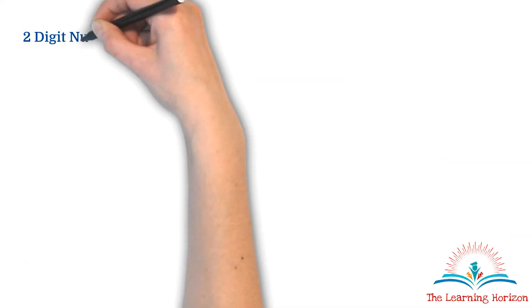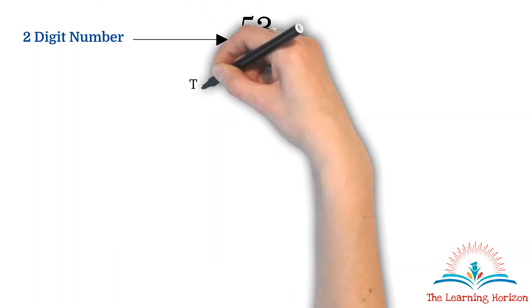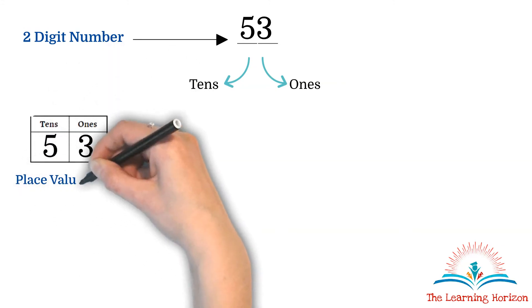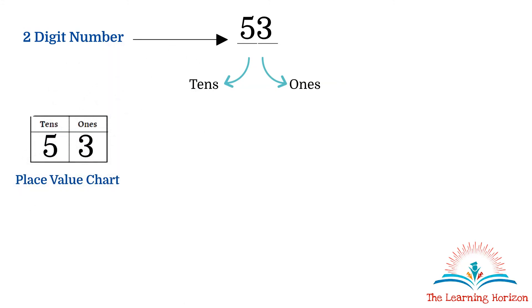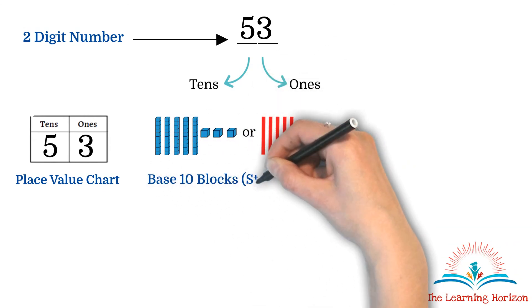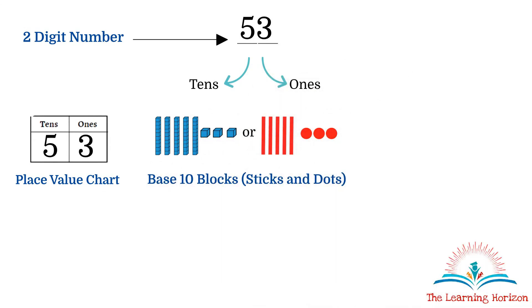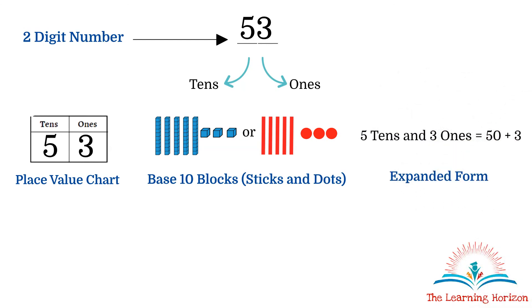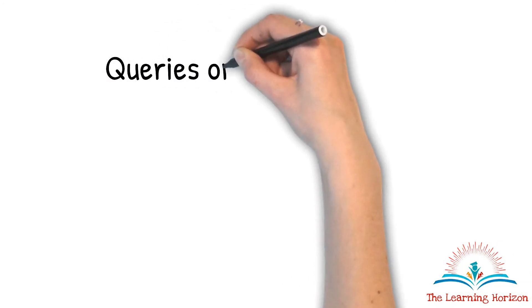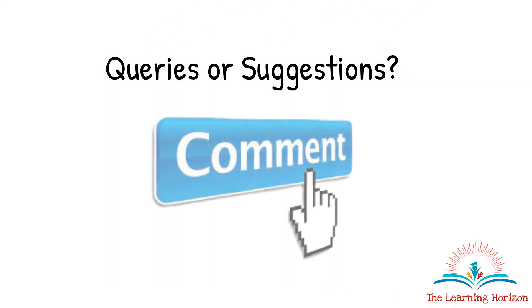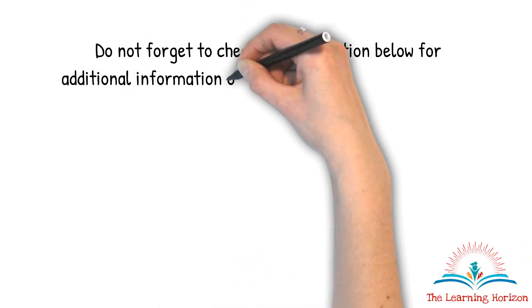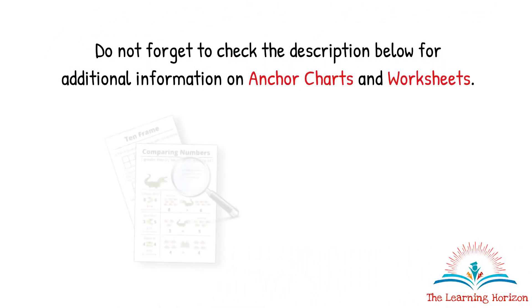To summarize, today we have learned how a two-digit number has tens and ones, how to identify the tens and ones and place them in the place value chart, how the number can be represented using base 10 blocks, and finally how to write the expanded form for a given number. If you have any queries or suggestions, kindly leave a comment below, and don't forget to check the description below for additional information on anchor charts and worksheets.